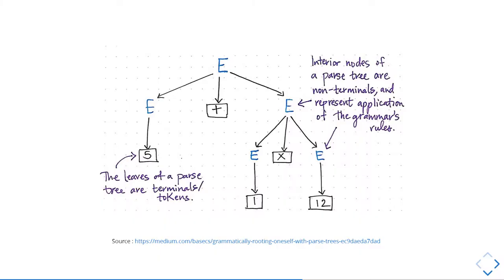This is how the parse tree looks. For example, you have an expression like 5 plus 1 into 12 — it converts it into a tree like this. That was the parse tree, and the other was the abstract syntax tree.